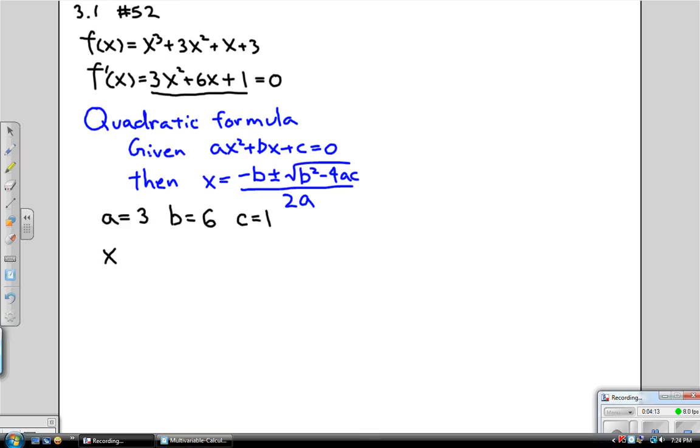So x is equal to negative b, so it's negative 6, plus or minus. So that gives us two options, or in other words, two possible solutions, plus or minus the square root of b squared. Since b is 6, 6 squared is 36 minus 4ac, so 4 times 3 times 1, all over 2a. And 2a is 2 times 3, so that is 6.